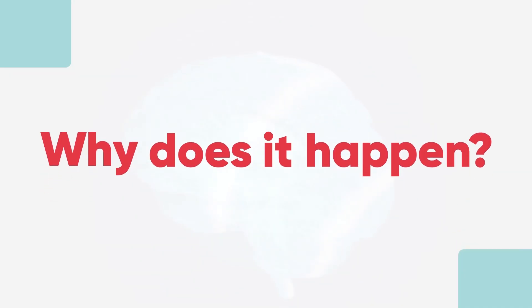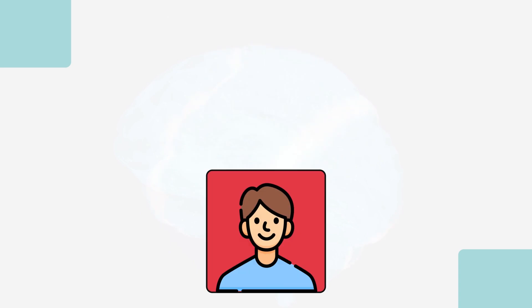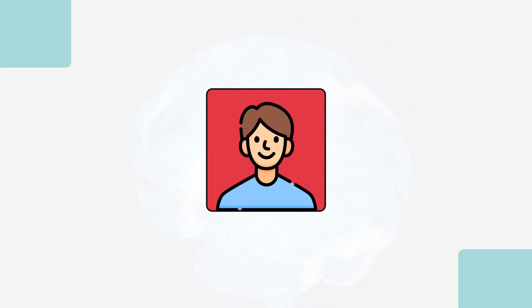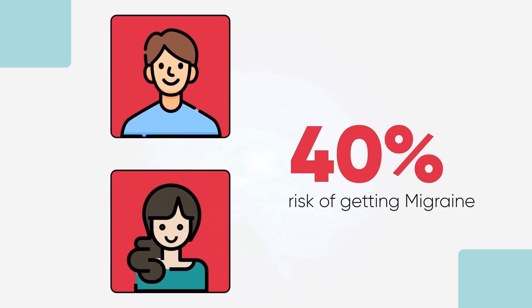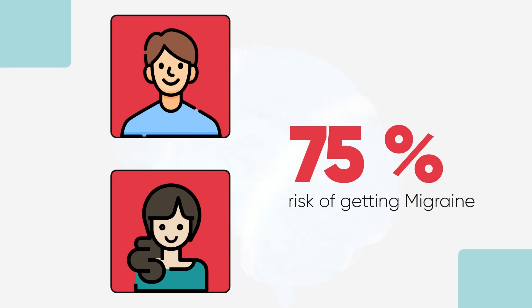So why does it happen? What causes migraine? The answer is complex because we don't really know of one single reason that causes migraine, but we know that there are multiple causes. We do know that genetics play a role — if you have one parent with migraine, you have a 40% more risk of getting migraine yourself. And if both of your parents have migraine, there is almost a 75% chance that you too will get migraine at some point in your life. Apart from genetics, there are many other causes in the environment around you that can activate a migraine attack, and we call these things triggers.